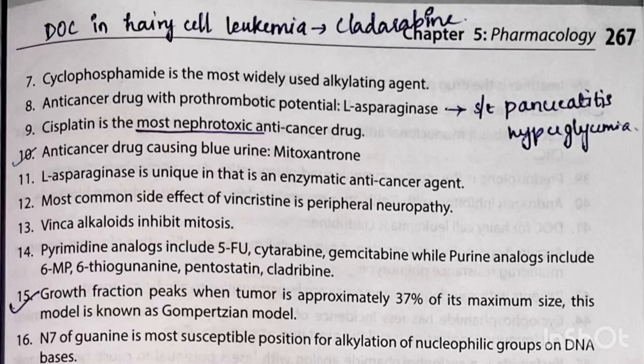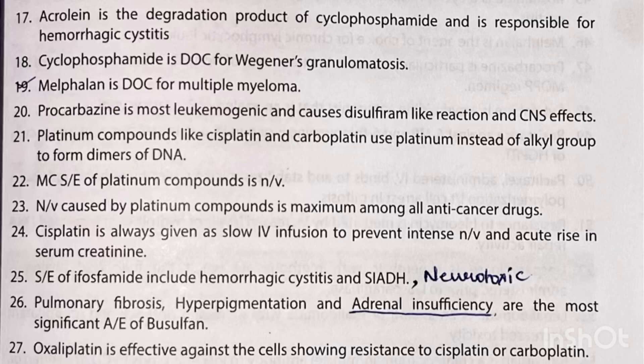N7 of guanine is the most susceptible position for alkylation of nucleophilic groups of DNA bases. Acrolein is a degradation product of cyclophosphamide and is responsible for hemorrhagic cystitis. Cyclophosphamide is the drug of choice for Wegener's granulomatosis. Melphalan is the drug of choice for multiple myeloma. Procarbazine is the most leukemogenic and causes disulfiram-like reactions and CNS effects.